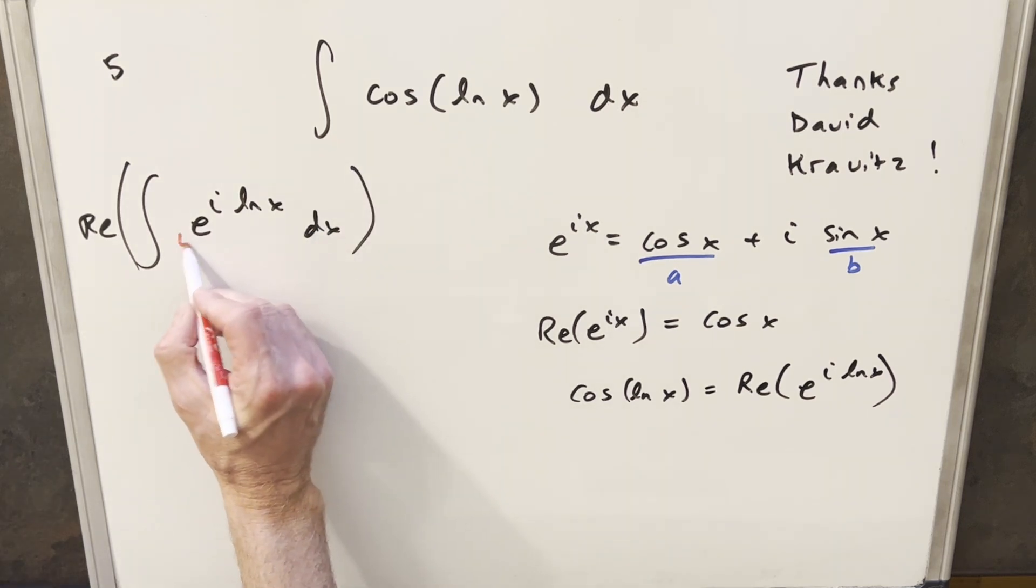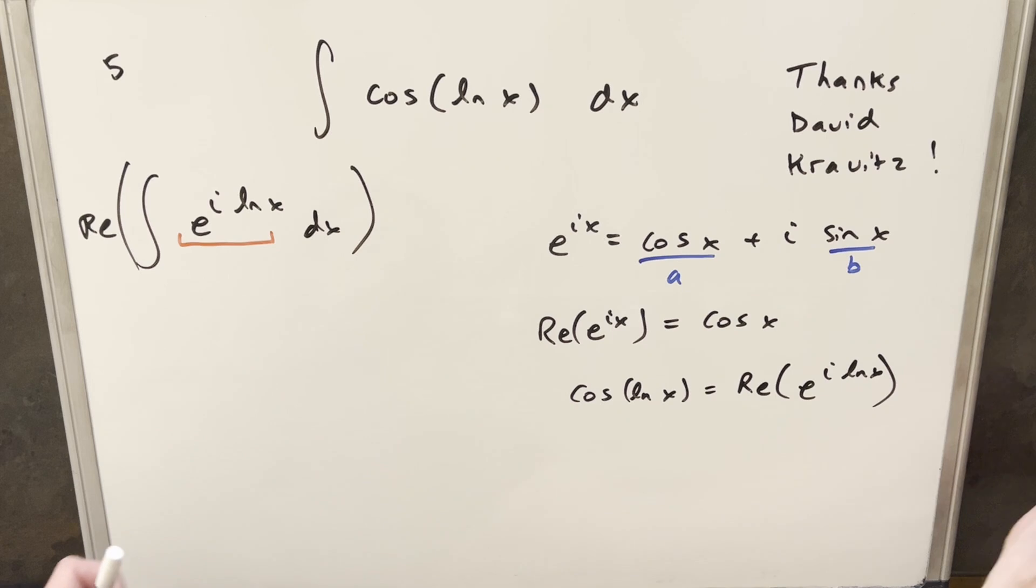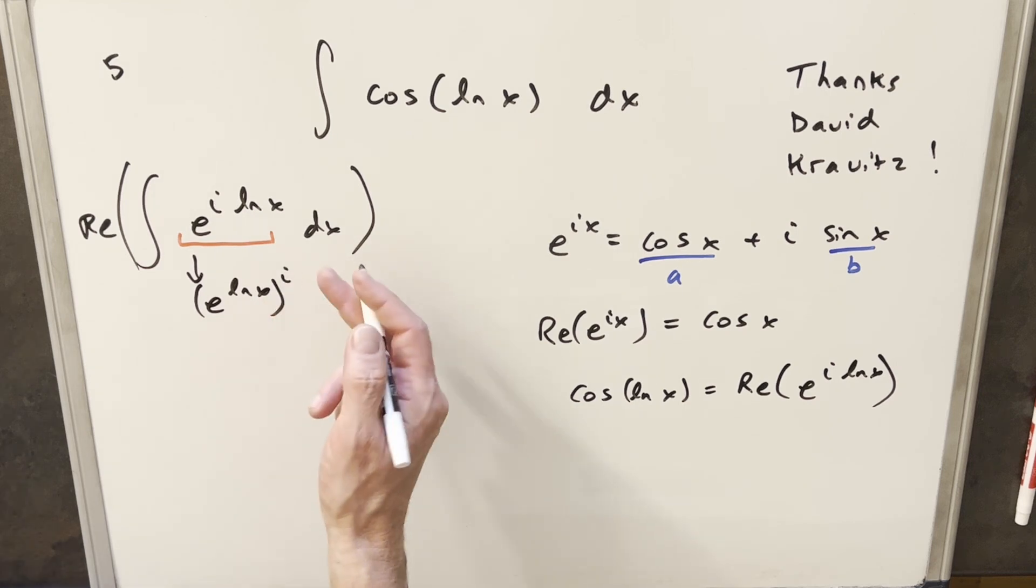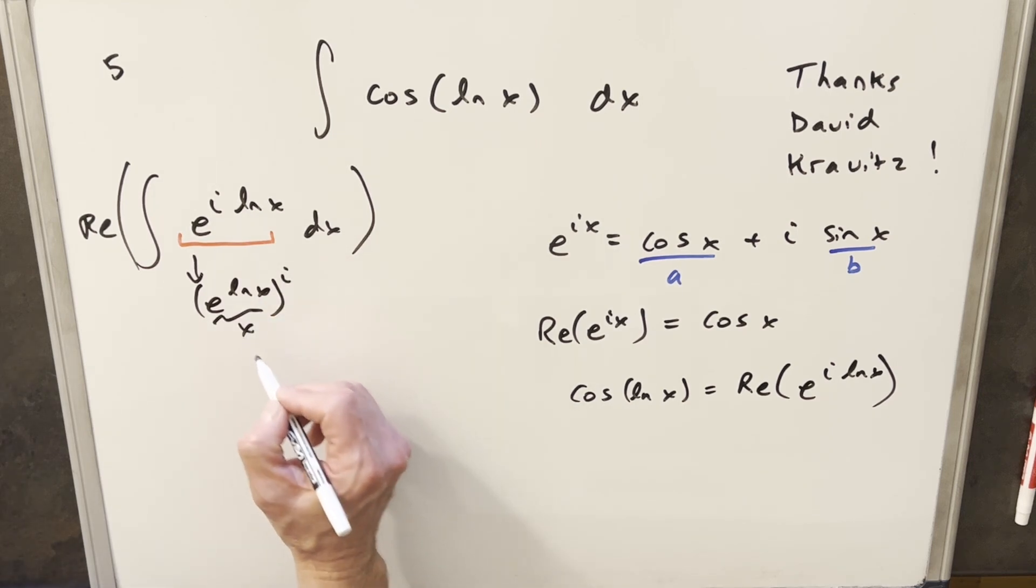But then from here, I want to actually just rewrite this a little bit. We can write this as e ln x all to the i just with exponent properties. But then this is the same thing as x. So then this is actually equal to x to the i.